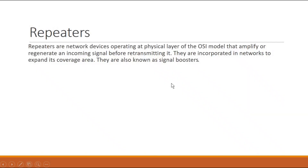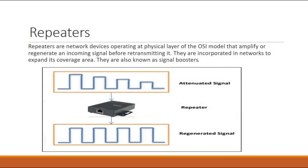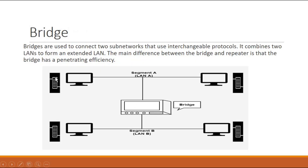Next, what are repeaters? A repeater is an electronic device that amplifies the signal. It works on the physical layer of the OSI model. It amplifies and regenerates an incoming signal before retransmitting it. They are incorporated in networks to expand coverage area and are also known as signal boosters. For example, if your Wi-Fi has a very low signal, a repeater will regenerate that signal so it becomes stronger.